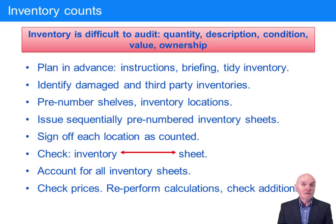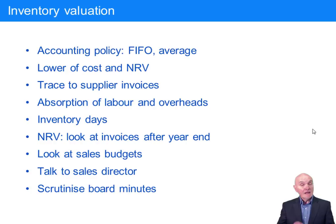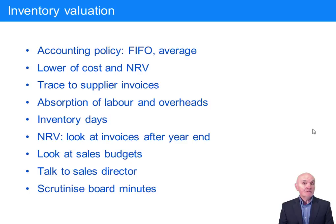For inventory valuation, it's important to know what accounting policy is used. The two allowable ones are FIFO and average cost. This may mean we have to re-perform some calculations — for example, tracing deliveries back to particular invoices to bring in the right cost under FIFO, or re-performing the average cost calculations — just to ensure that the accounting policy has been adhered to.